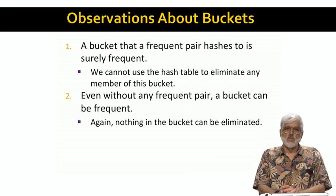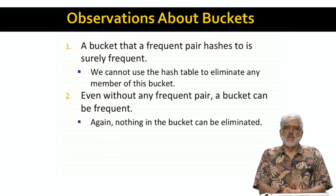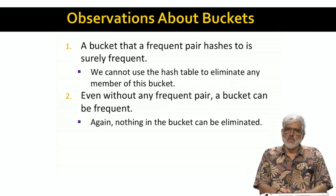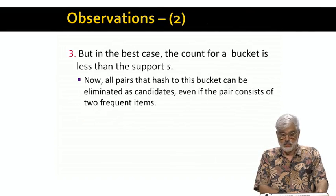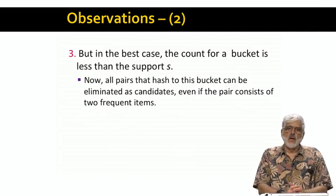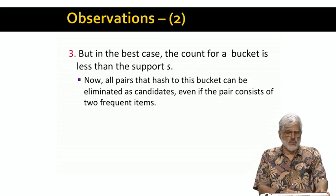It is also possible that a bucket will be frequent, but there is no frequent pair hashing to that bucket. Remember, each bucket's count is the sum of the counts of all the pairs that hash to it. But the only time we have to count a pair on the second pass that turns out not to be frequent is when the pair consists of two frequent items and, for one of the two reasons mentioned, its bucket turns out to be frequent. However, we get a lot of leverage when a bucket is not frequent — in that case, we do not have to count any of the pairs that hash to that bucket, even if the pair consists of two frequent items.